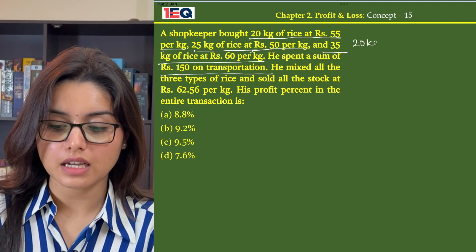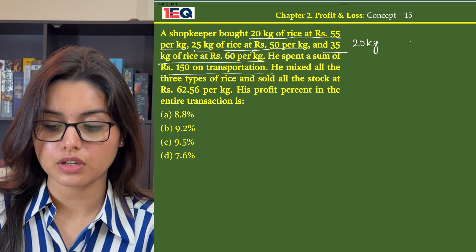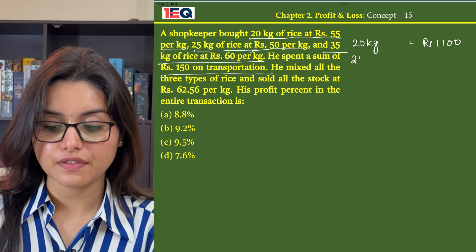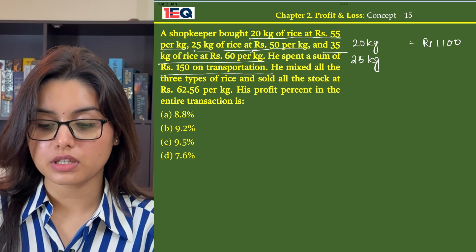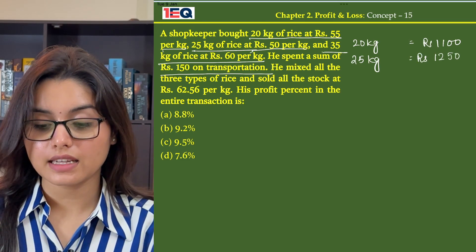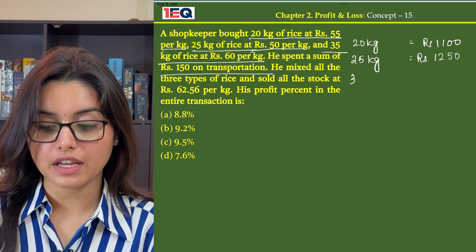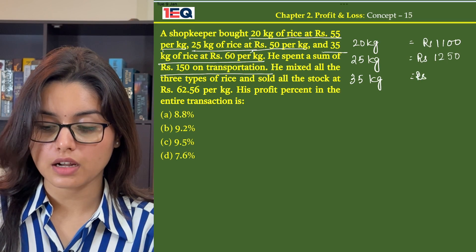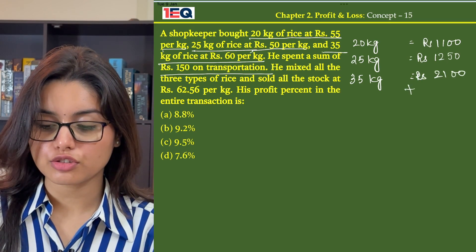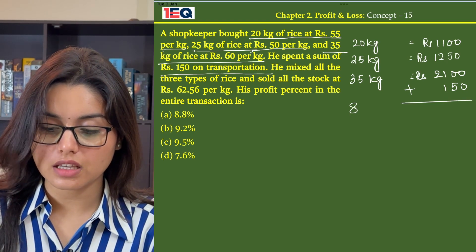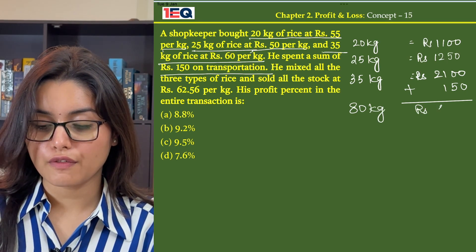He bought 20 kg of rice at Rs 55 per kg, spending Rs 1100. Then he bought 25 kg of rice at Rs 50 per kg, spending Rs 1250. Then he bought 35 kg of rice at Rs 60 per kg, spending Rs 2100. He spends an extra Rs 150 on transportation. So his total cost price for 80 kg of rice is Rs 4600.